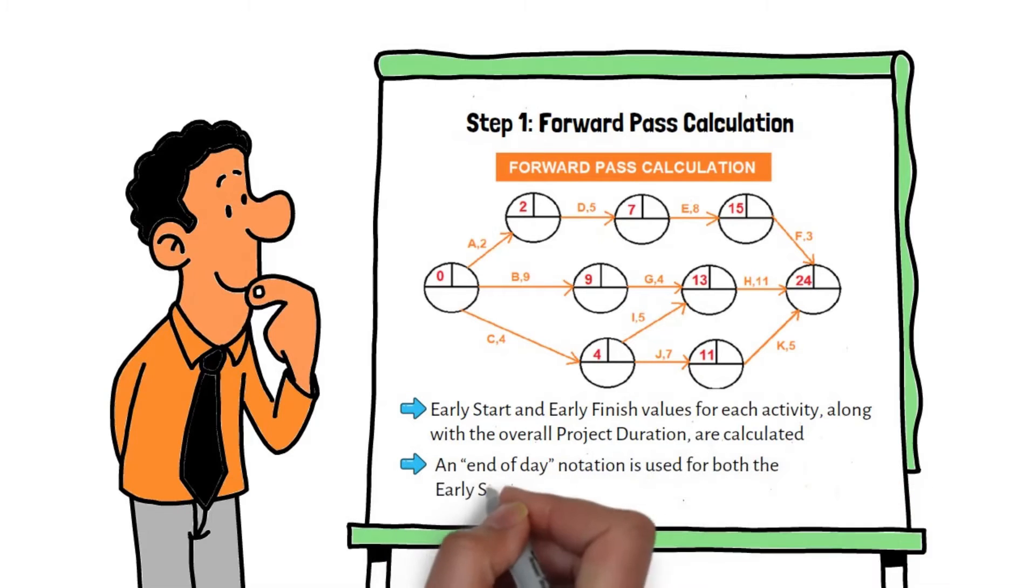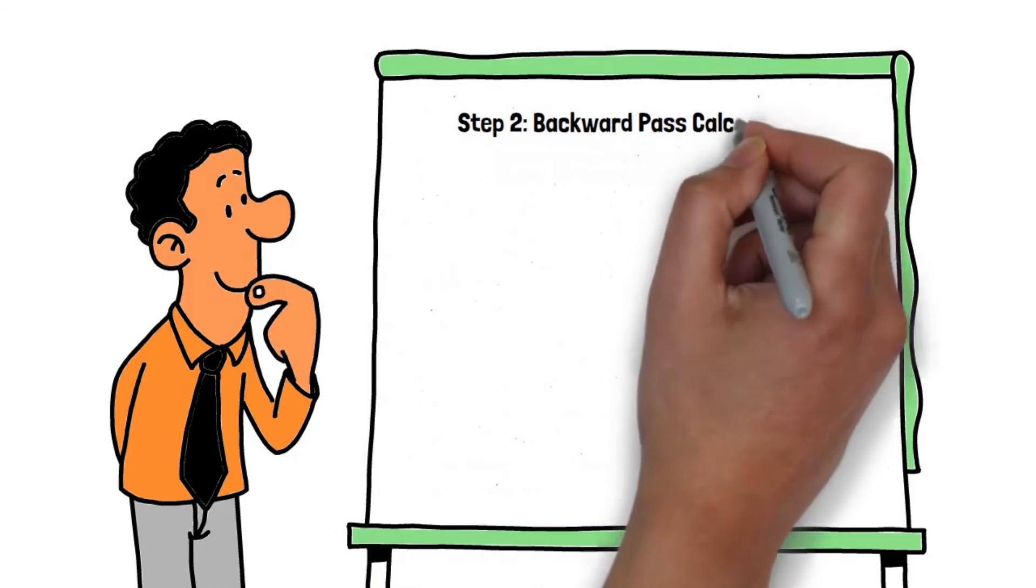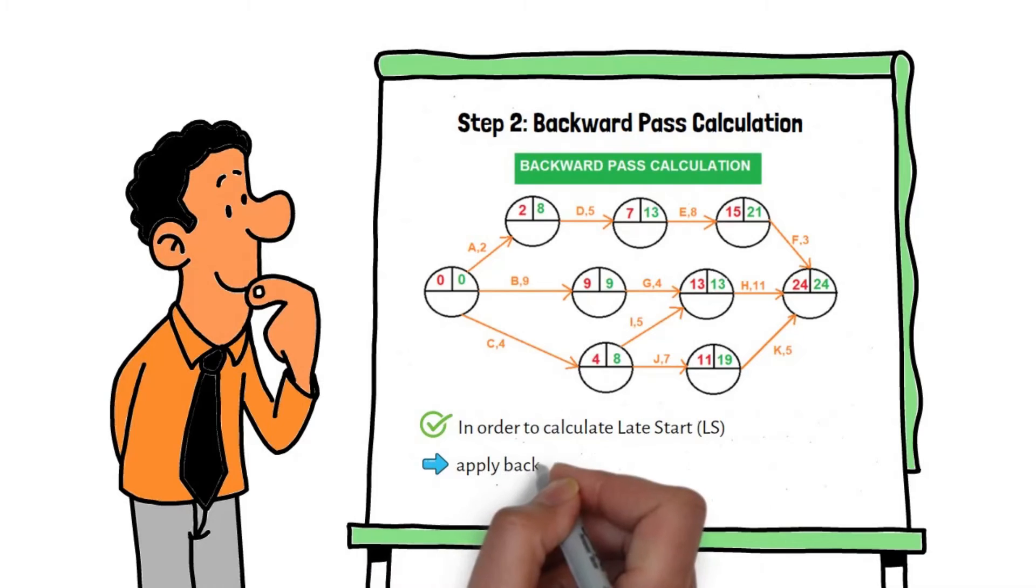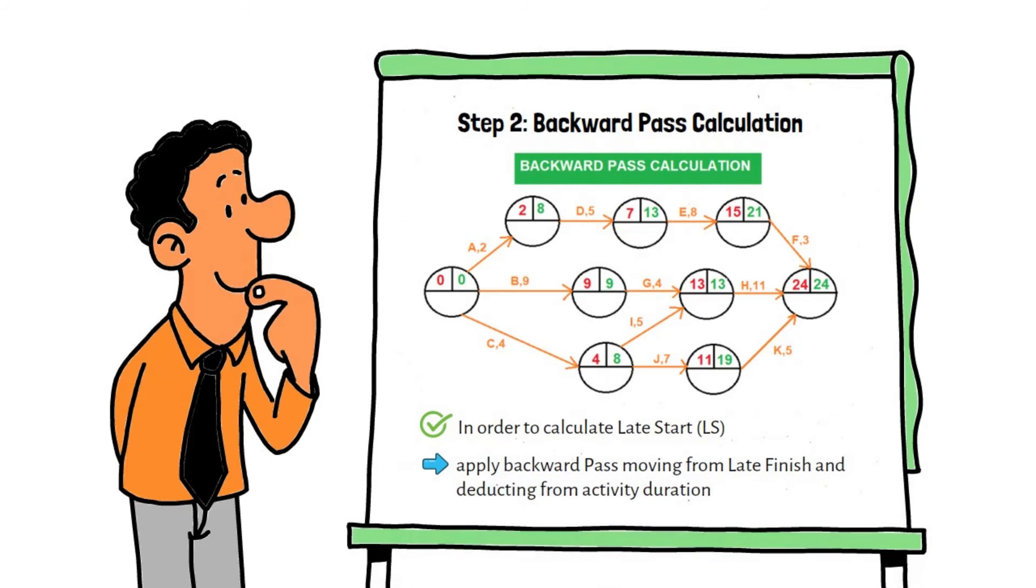Step 2: backward pass calculation. In order to calculate late start, we apply backward pass moving from late finish and deducting from activity duration.